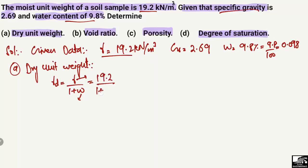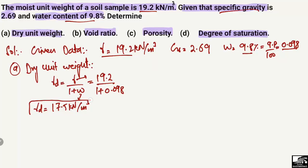Dividing by 1 plus w, where w is 0.098, we get gamma_d for this sample. The dry unit weight comes out to be 17.5 kilonewton per cubic meter. This is the first unknown — the dry unit weight of this sample.